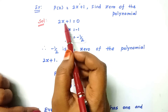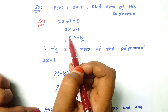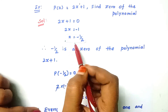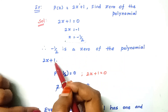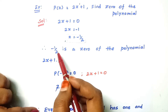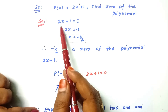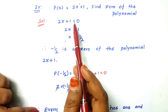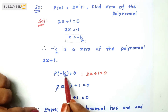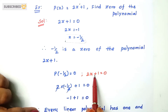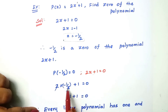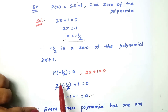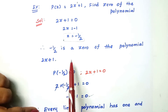Now let's look at the zero of the polynomial 2x plus 1. The value of the linear polynomial will be applied to x and then the value will be 0. So, p of minus 1 by 2 equal to 0. Substituting: 2 into minus 1 by 2 plus 1 equals 0. The 2s cancel, giving minus 1 plus 1 equals 0. So p of minus 1 by 2 is 0, meaning minus 1 by 2 is the zero of the polynomial.